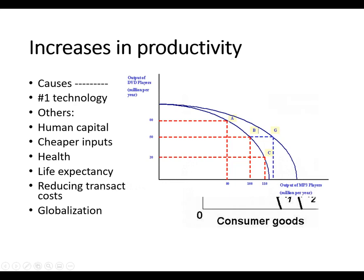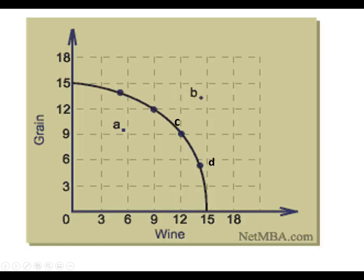This is if we go from output of DVDs and this is output of MP3 players. If we look at this one, we haven't changed the productivity level of the DVD players because both curves are the same there. But we did increase the output of MP3 players. So this would be an example where only one output has been changed by something over here. That's possible too, but the other product doesn't change.